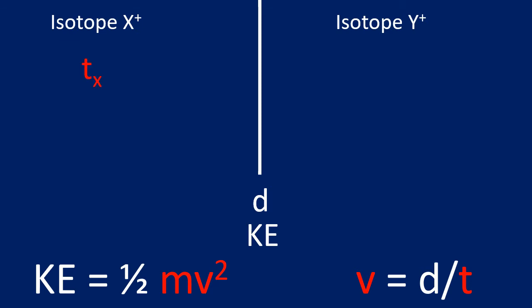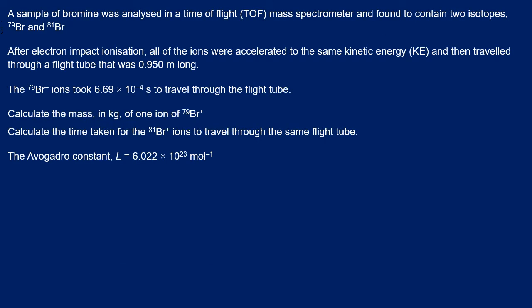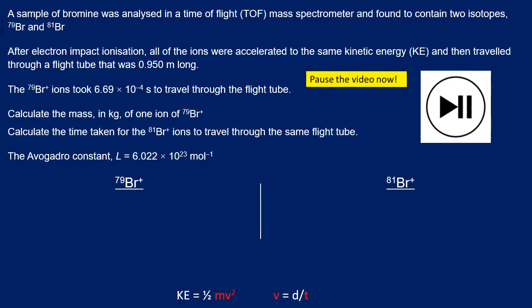The time for isotope X will differ from isotope Y, as will their masses. Once we understand this structure, we can logically approach the answer. Here is a past exam question worth five marks — the two isotopes of bromine, 79 and 81. Kinetic energy and distance are the same for both; mass, velocity, and time will differ. Pause the video now and attempt it before hearing the answer.